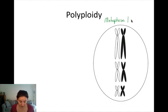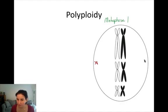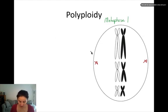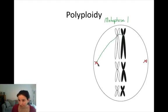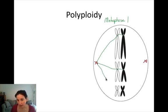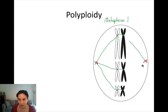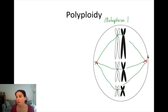In metaphase one, what normally happens is the centrosomes are on either side, producing microtubules that interact with the chromosomes. During a non-disjunction event that results in polyploid gametes, one centrosome is producing microtubules and appropriately interacting with the chromosomes, while the other centrosome is not.